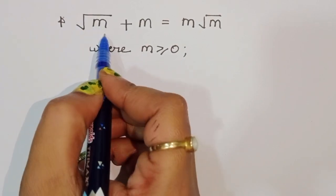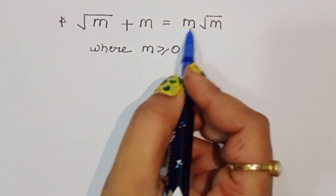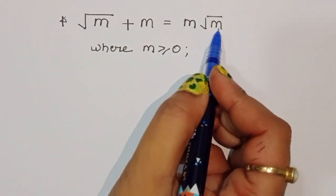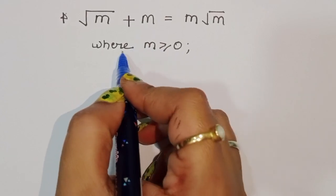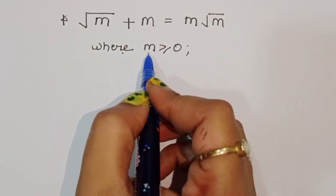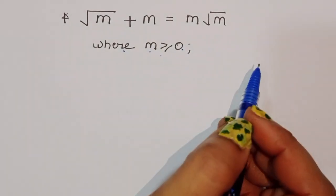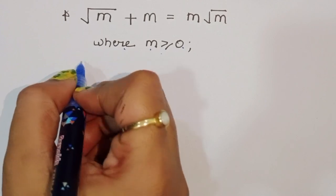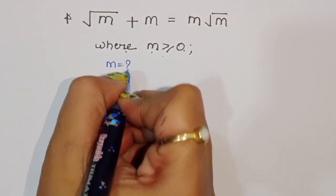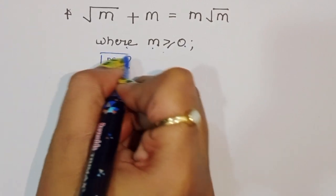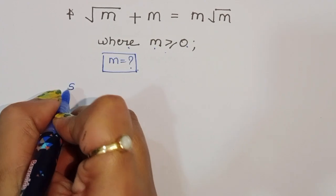The question gives us: square root of m plus m is equal to m times square root of m. We have to find the value of m, where the condition is m is greater than or equal to 0. Let's see the solution.